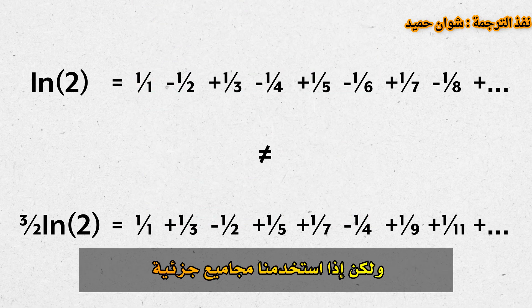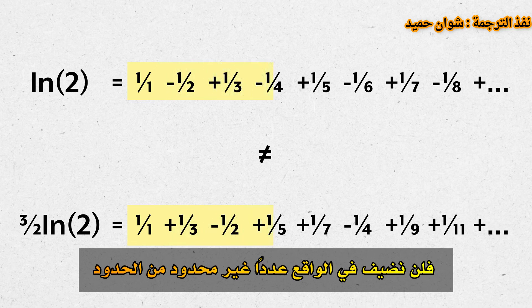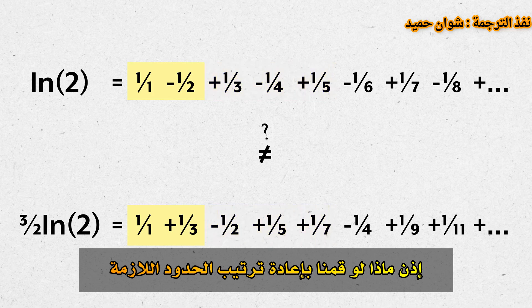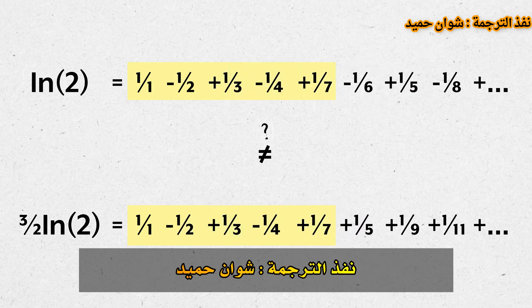But if we only use partial sums to determine the sum of those infinite series, we never actually add infinitely many terms. So what if we only ever rearrange the terms needed to make the partial sums equal? Let me know your thoughts in the comments, and thanks for watching.